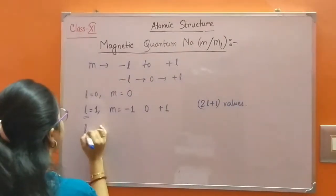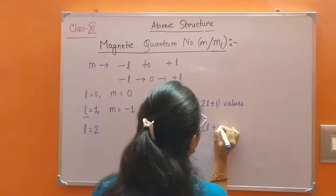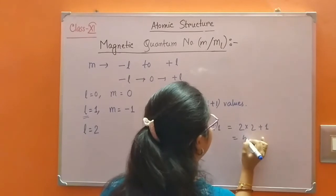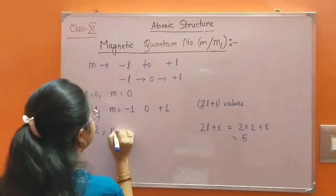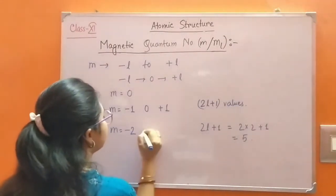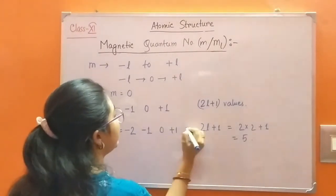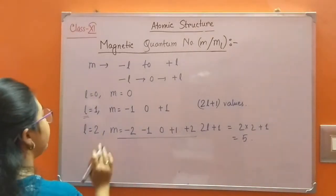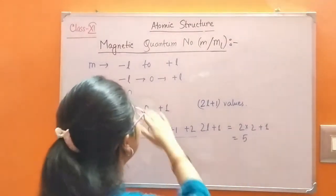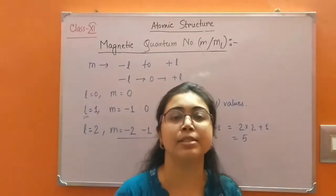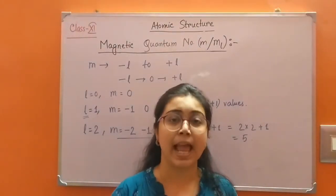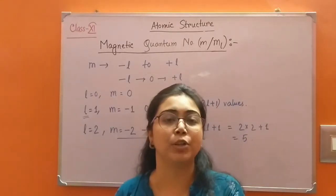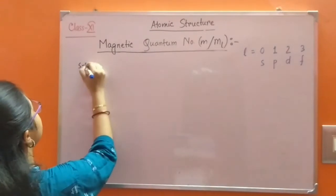For L equals 2, M equals 5 values. These 5 values are M equals minus 2, minus 1, 0, plus 1, plus 2. These are 5 values of M for L equals 2. Magnetic quantum number determines in which orbital an electron lies, and also the number of orbitals corresponding to a particular sub-shell.